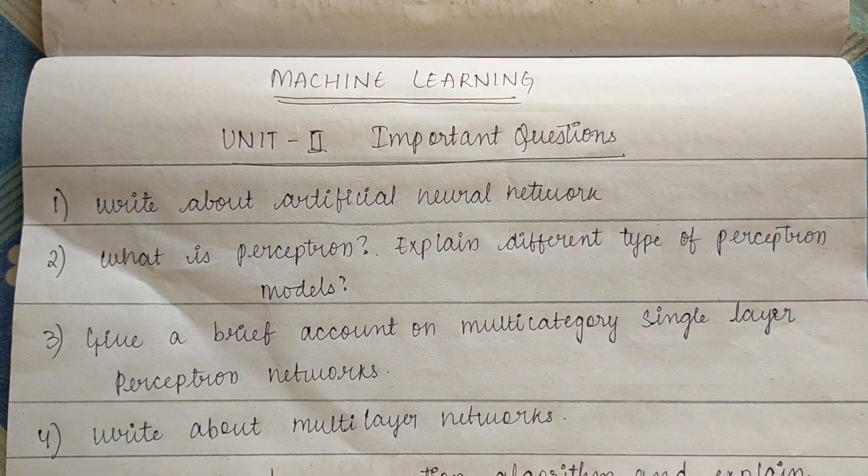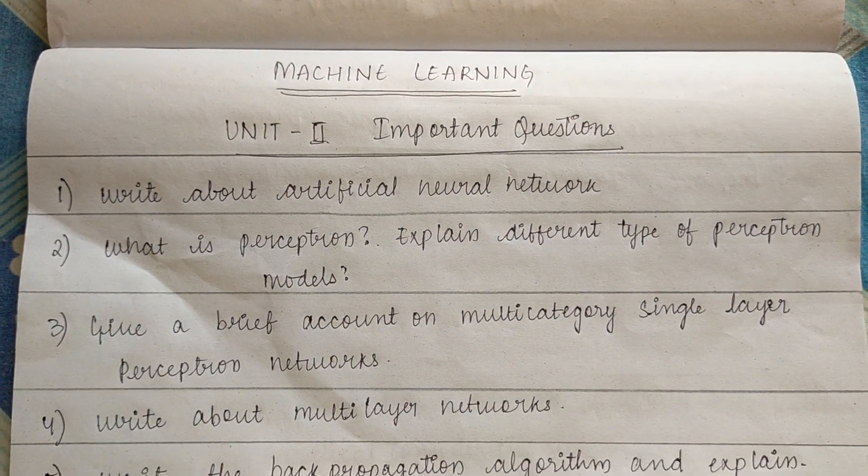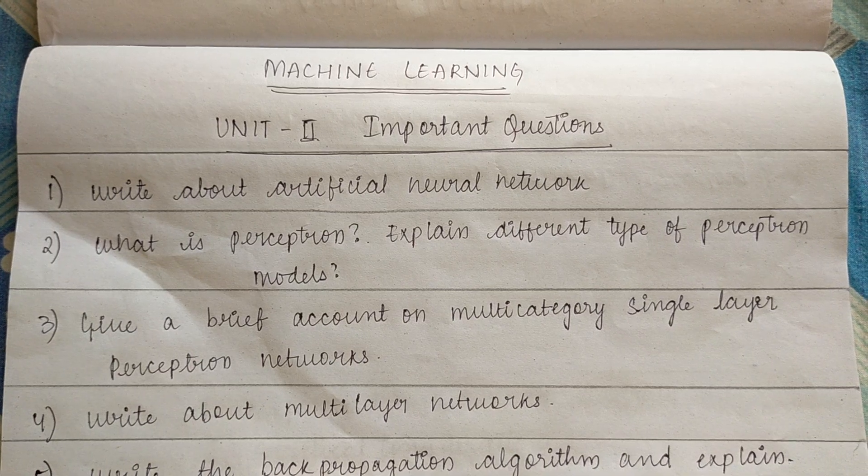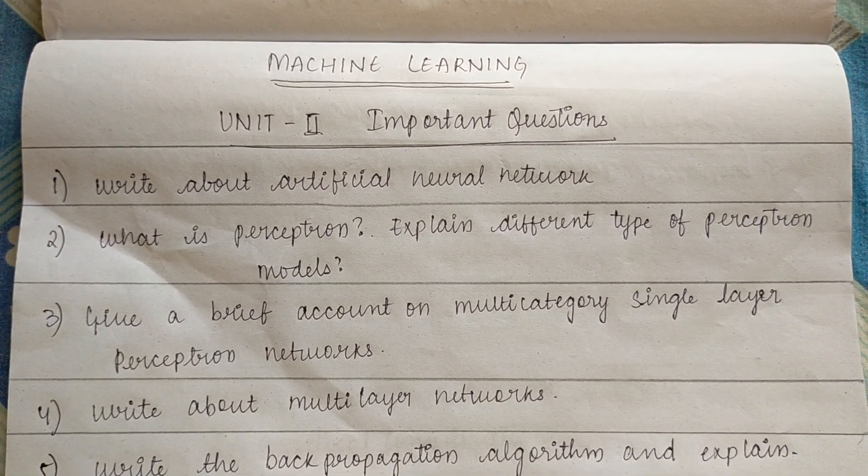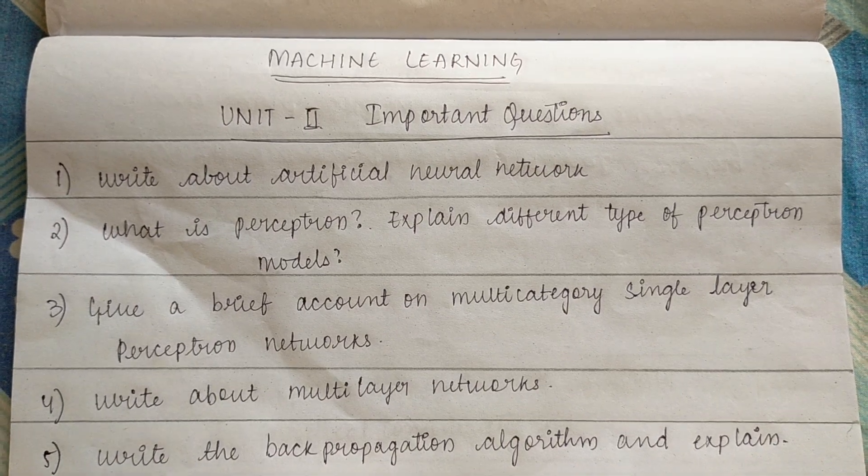The first one is write about artificial neural networks. Second one is what is perceptron, explain different types of perceptron models. Third one is give a brief account on multi-category single-layer perceptron networks.